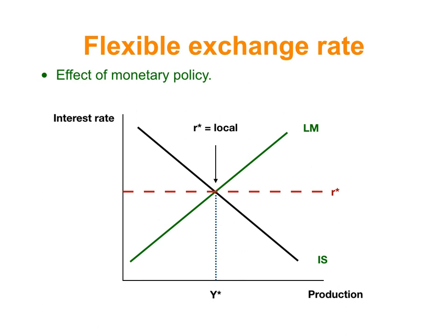Let's start with this basic diagram that we have considered before. Here we have an equilibrium in the goods market and the money market, and the local interest rate is the same as the international interest rate.